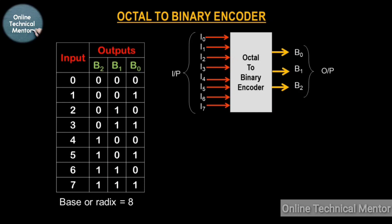Before implementing the logic diagram, you have to derive an expression for the outputs. Since there are three outputs — B0, B1, and B2 — let's derive expressions for each separately, and then we will draw the logic diagram. For an encoder circuit, when any one of the inputs becomes high, the rest of the inputs will be in the low state, and for that high input you will get a binary combination in the output.